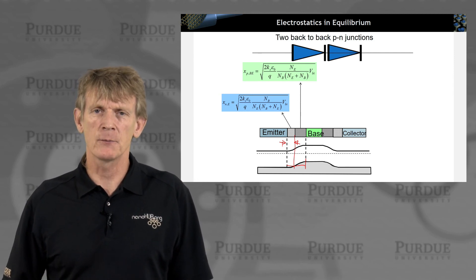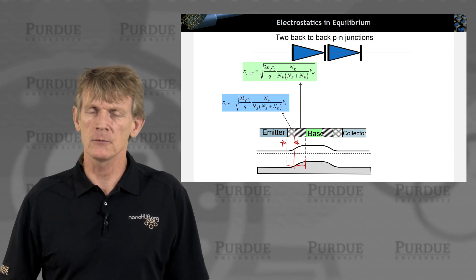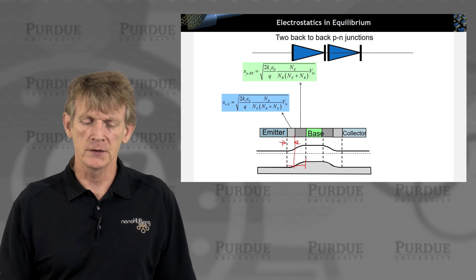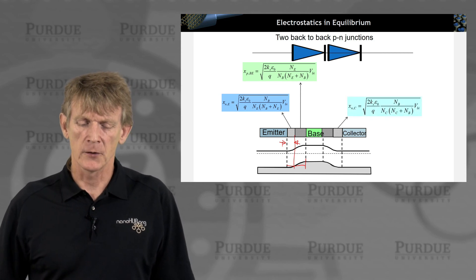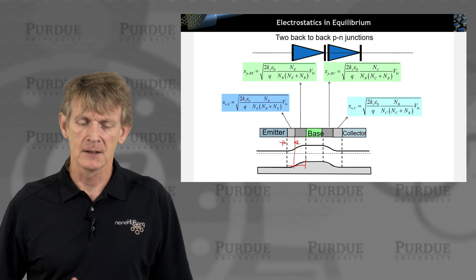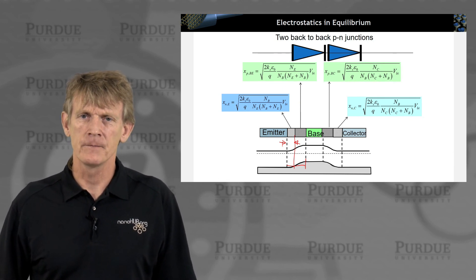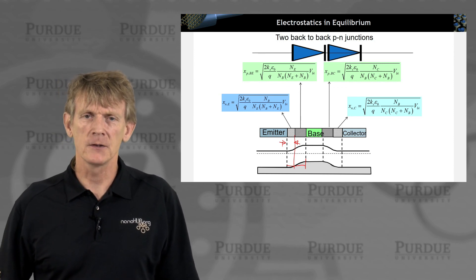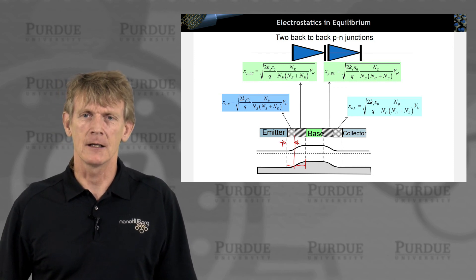So we go back to the depletion region approximation. You've seen these expressions now multiple times. There's nothing new here. We're just transferring those from the P-N junction. And you can do the same for the collector and base side as well. Same expressions. They look isomorphic to each other. You just plug in the appropriate doping levels on the respective junction side.